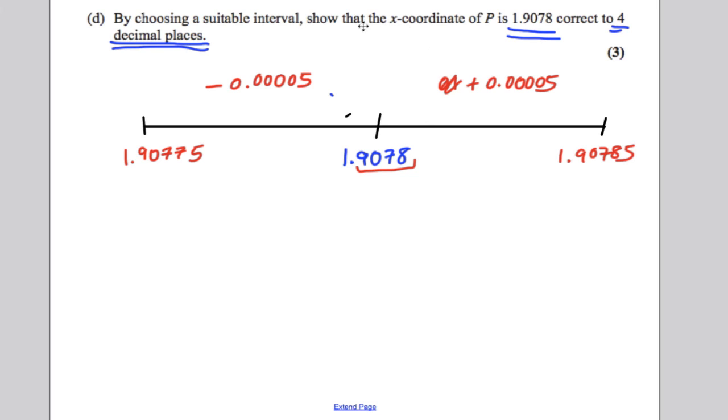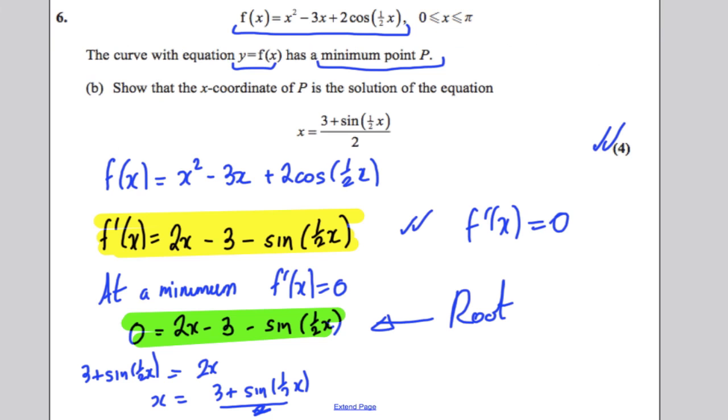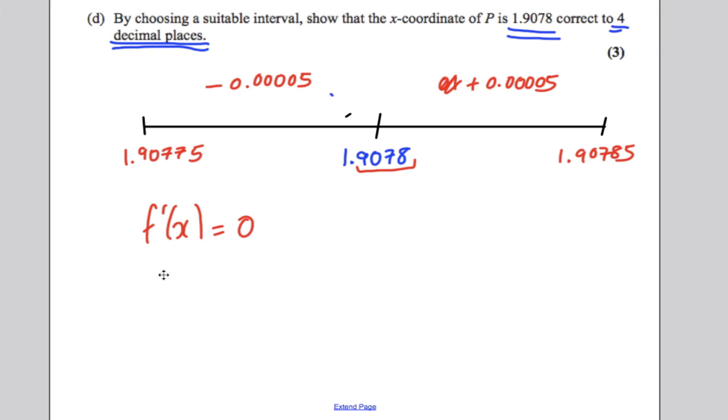Now, what function are we plugging into? The thing we're trying to find the root of is f dashed x equals 0. We're trying to find the x-coordinate of the minimum point. Now, many students go back and they try and substitute it into this and they can't get a change of sign. It's this you are substituting back into. So it's 2x subtract 3 subtract sine half x. So f dashed x is 2x subtract 3 subtract sine of a half x.